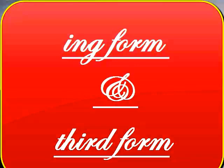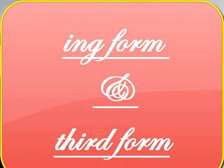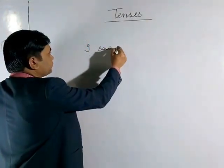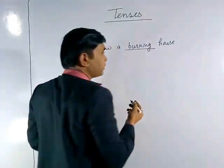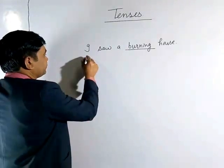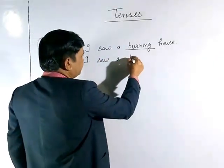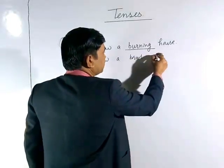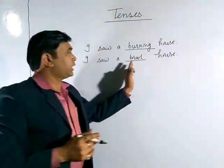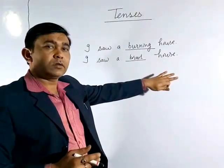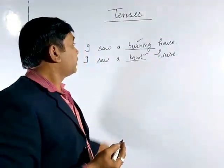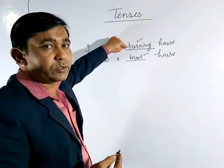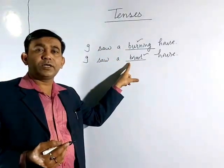Now let's discuss the ING form and the third form. For example, 'I saw a burning house' — this shows that the action of burning was going on. But 'I saw a burnt house' — here 'burnt' shows that the action of burning was over, it was completed. So the ING form shows continuity and is always used in continuous tenses, while the verb third form shows perfection and is always used in perfect tenses.